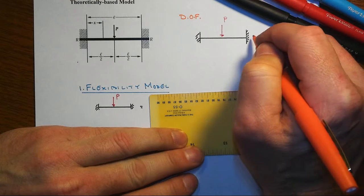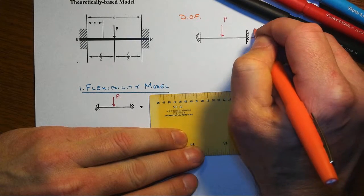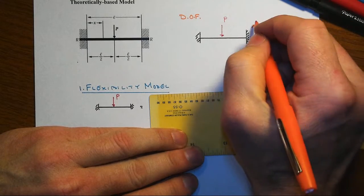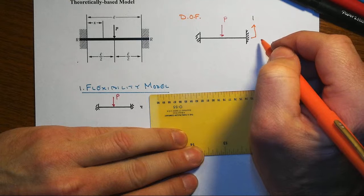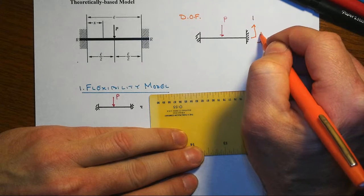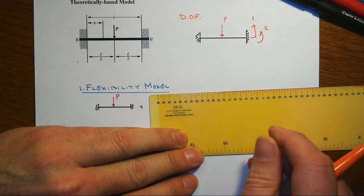That means we're going to have a degree of freedom associated with translation at that end, which we will call degree of freedom one, and then we'll have the rotation out here, which we'll call degree of freedom two.